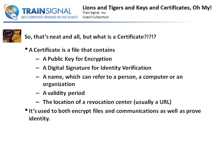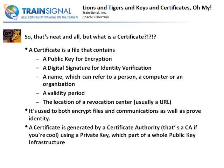A certificate is used both to encrypt files and communications as well as to prove the identity of a user, machine, or whatever — so it actually has a dual function. A certificate is generated by a Certificate Authority server, or CA. It's generated using a private key, which is part of the whole Public Key Infrastructure, or PKI. I want to give you a brief idea of what a public and private key is. So let me go ahead and illustrate this whole key thing.